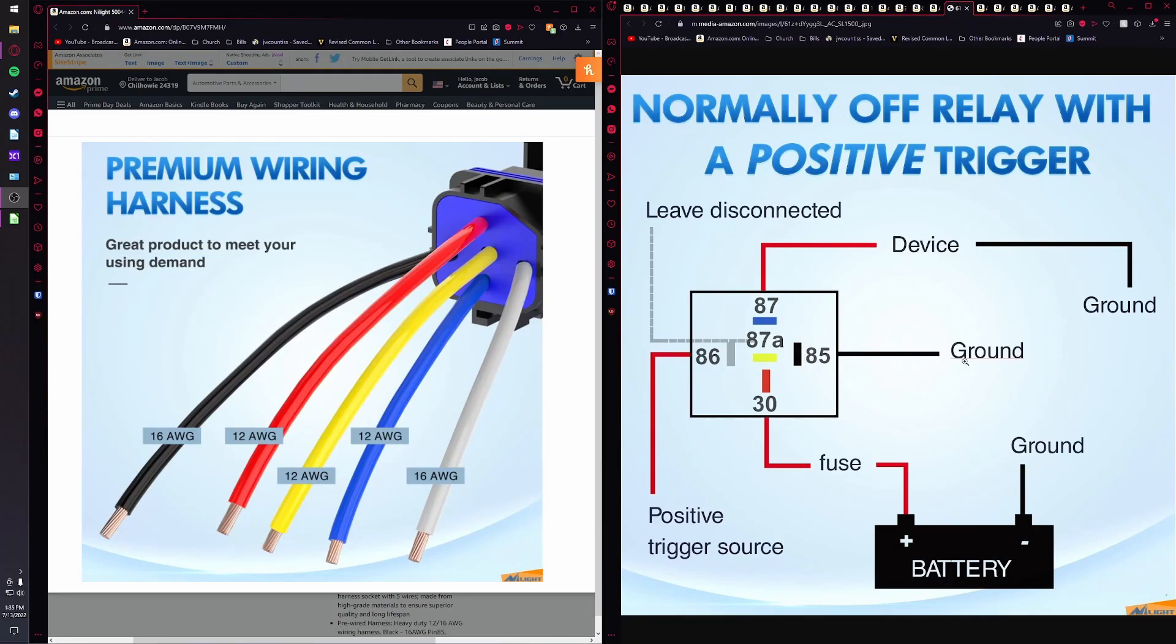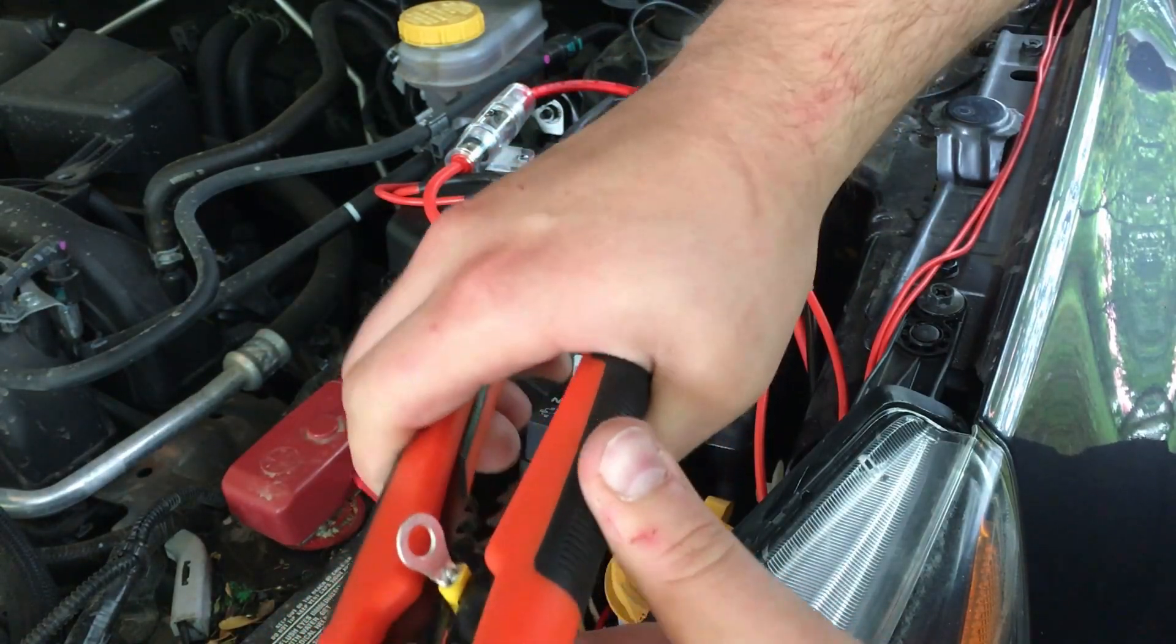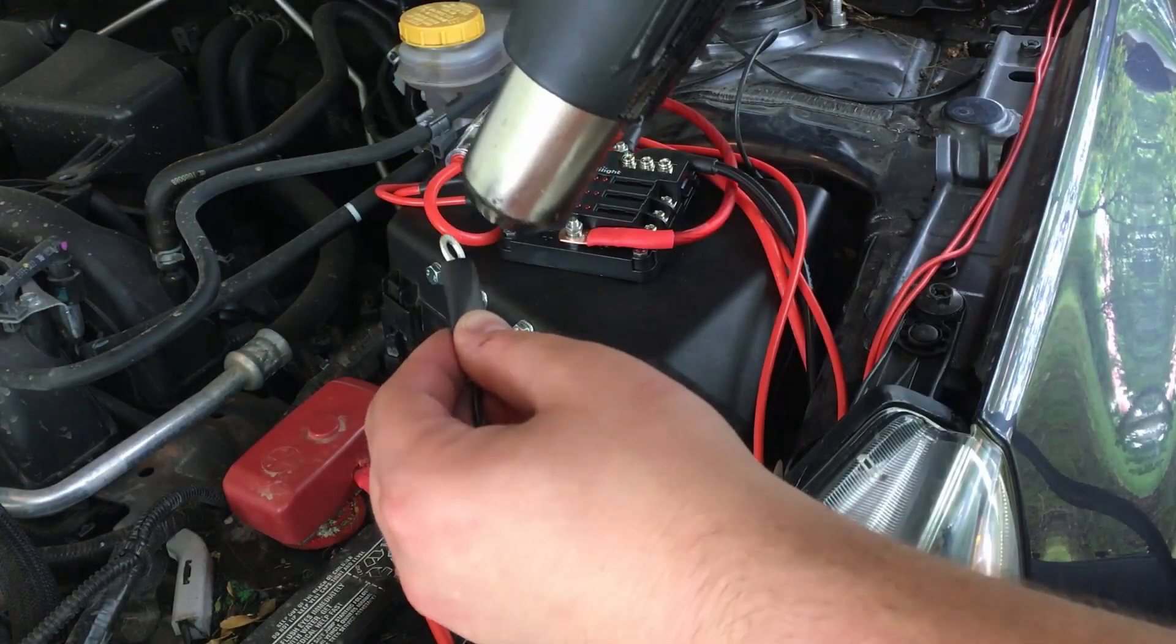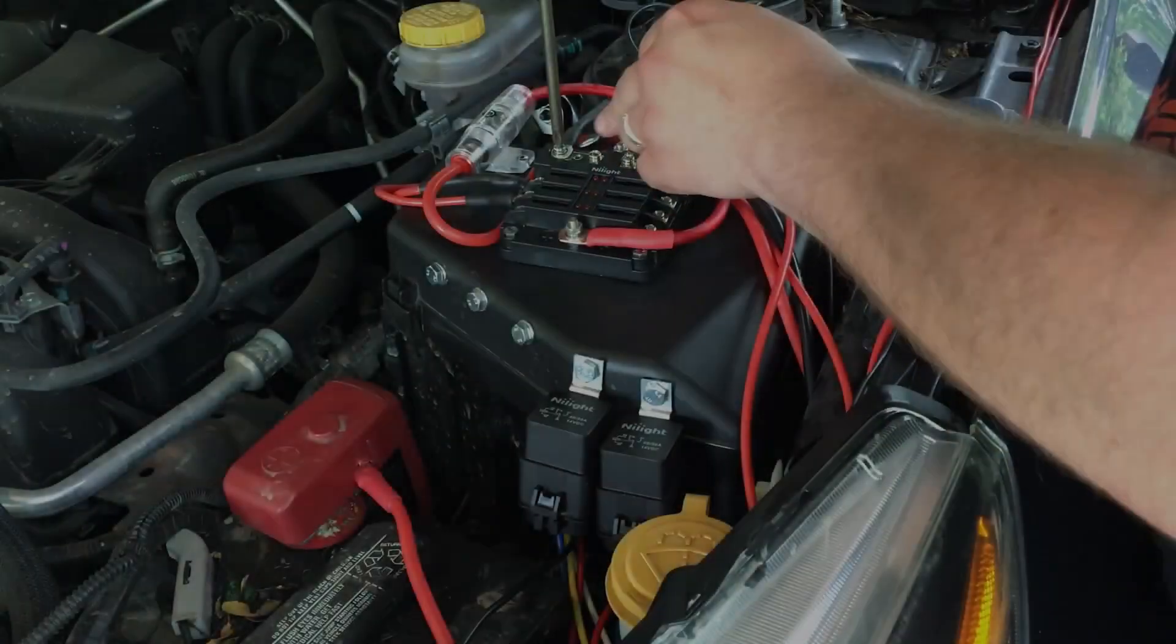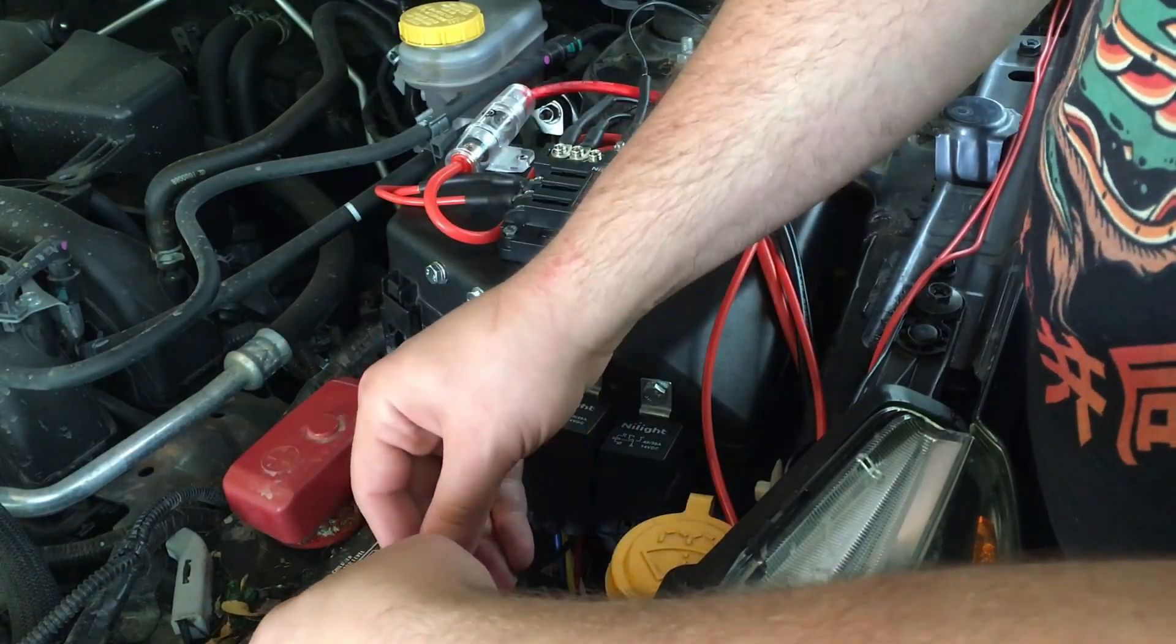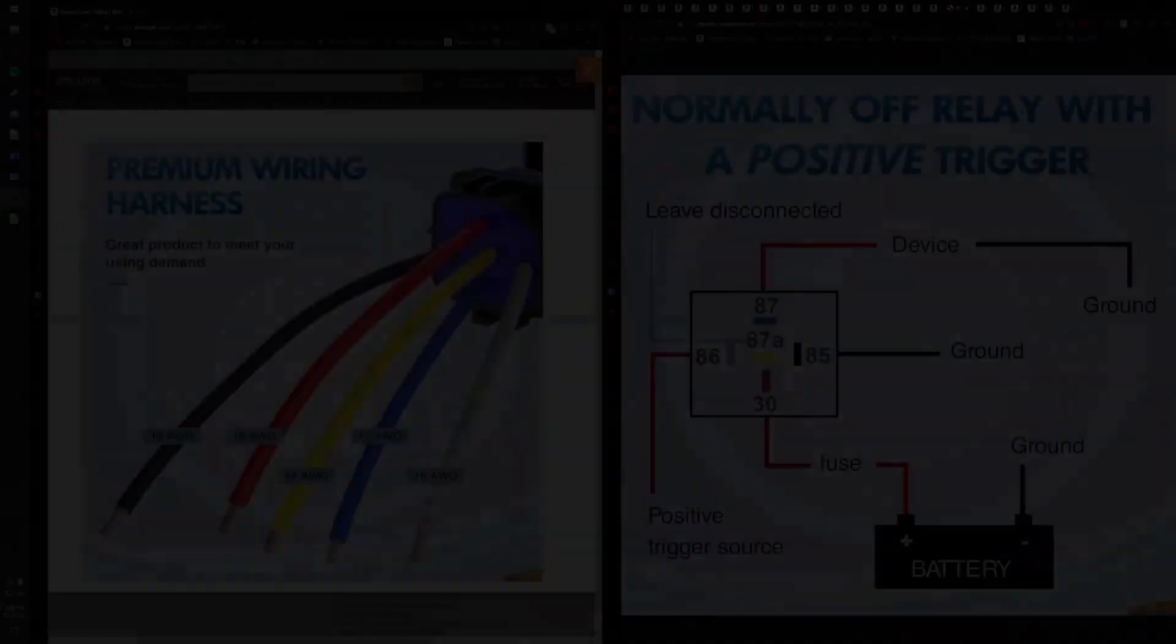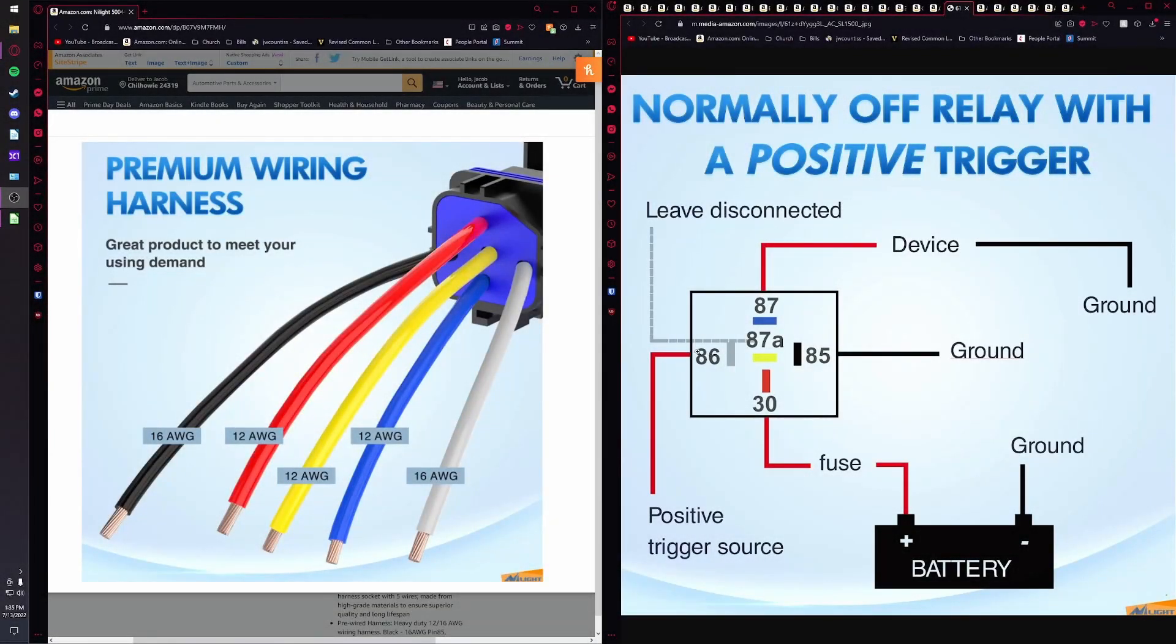Then you have just a simple ground. This gray wire coming out this other side is going to the positive trigger source, so this is your switch.